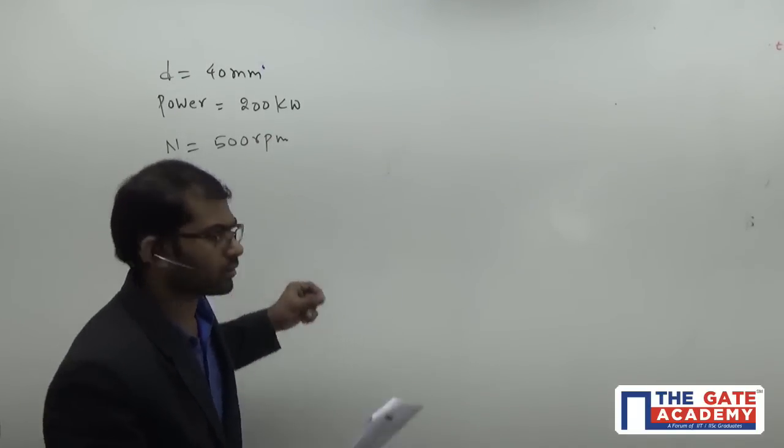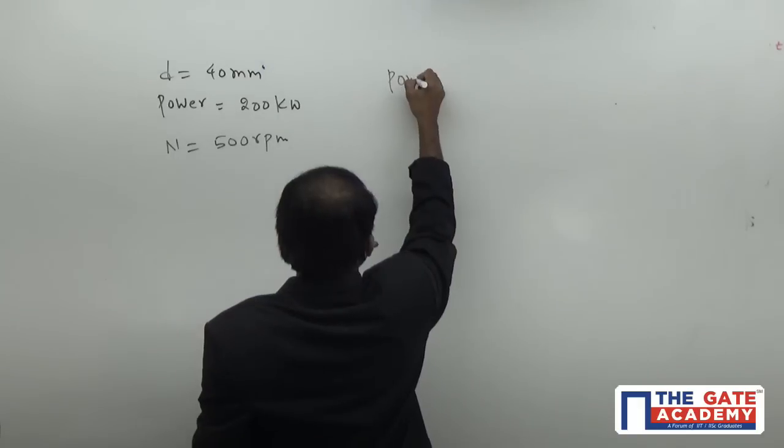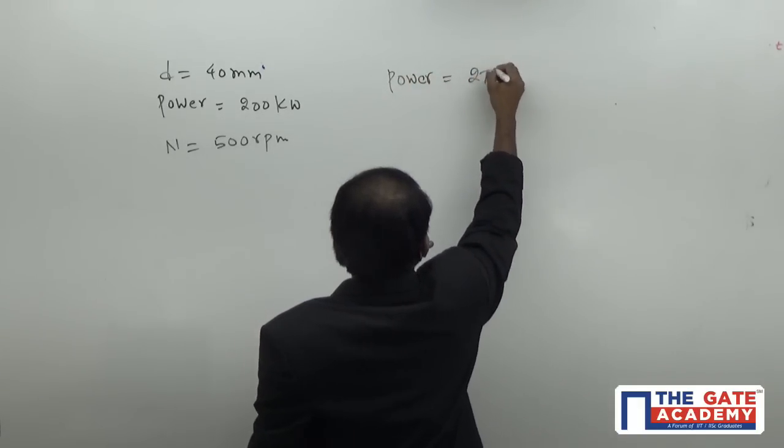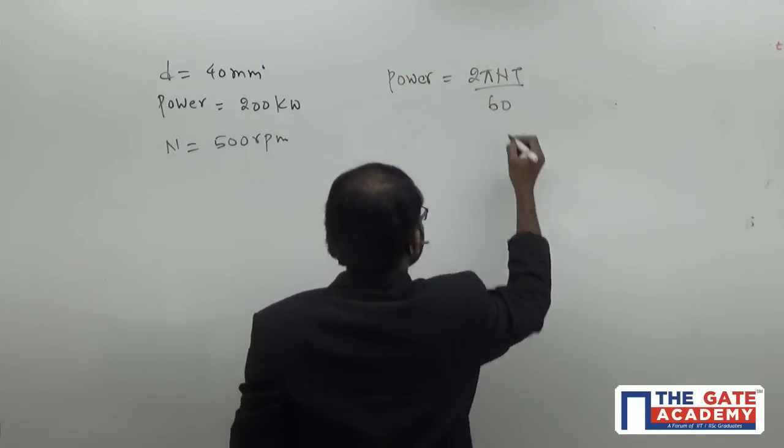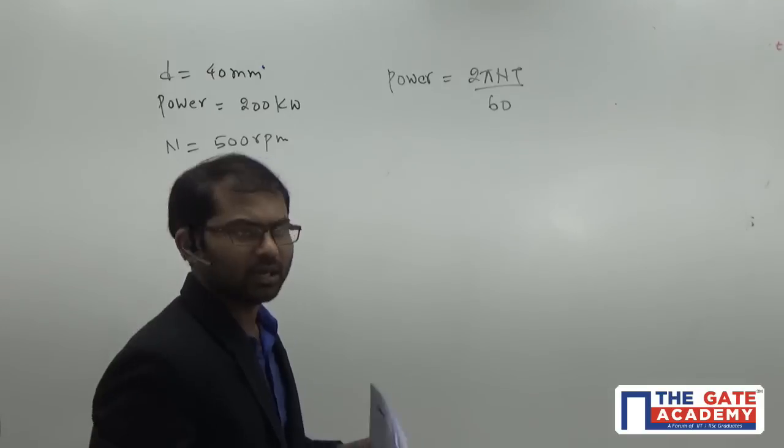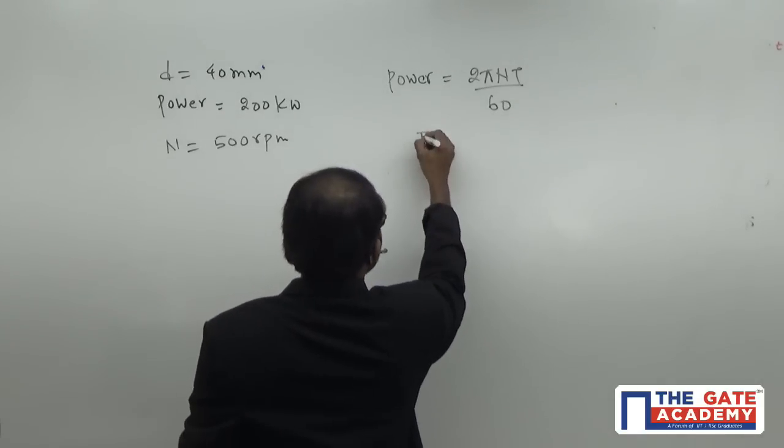We have a formula: power equals 2πnt/60, where n is speed and t is torque. From this, torque equals 60 times power divided by 2πn.